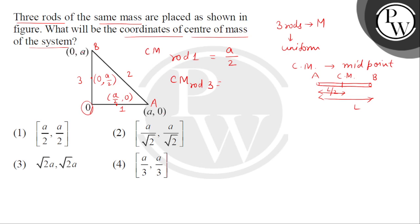X coordinate of A is A and Y is 0. X coordinate of B is 0 and Y coordinate is A. So, hume center of mass of rod number 2 ka answer milega A by 2, A by 2.